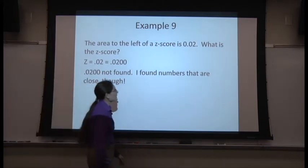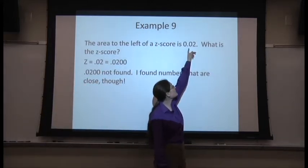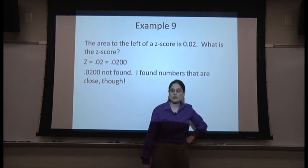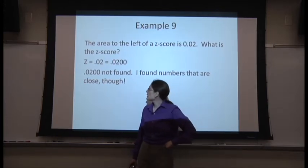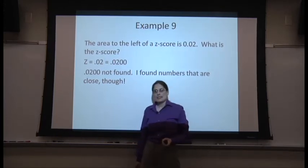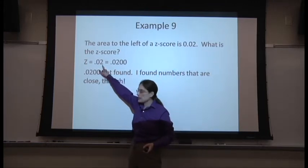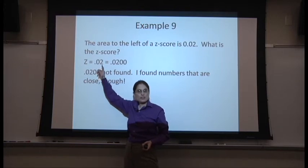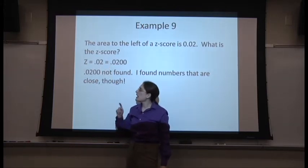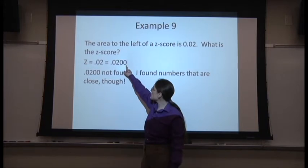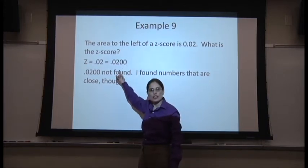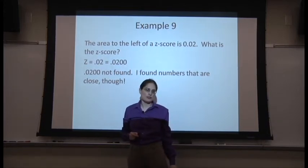The area to the left of a z-score is 0.02. What is the z-score? Now, you may notice there's only two decimal places here, but all the numbers on the table have four decimal places. I like to fill in two zeros to make it easier to spot the number that I'm looking for.